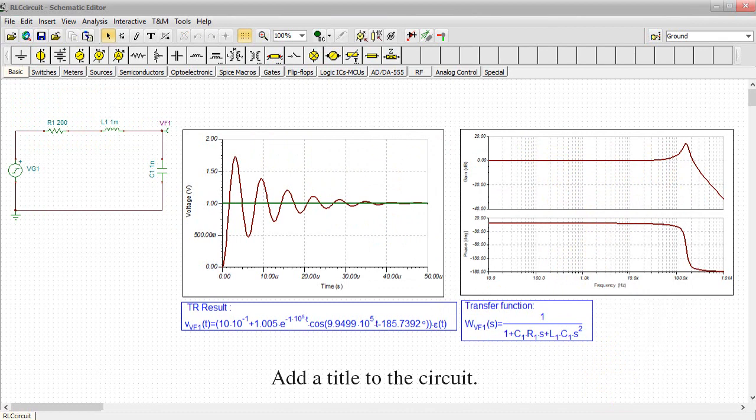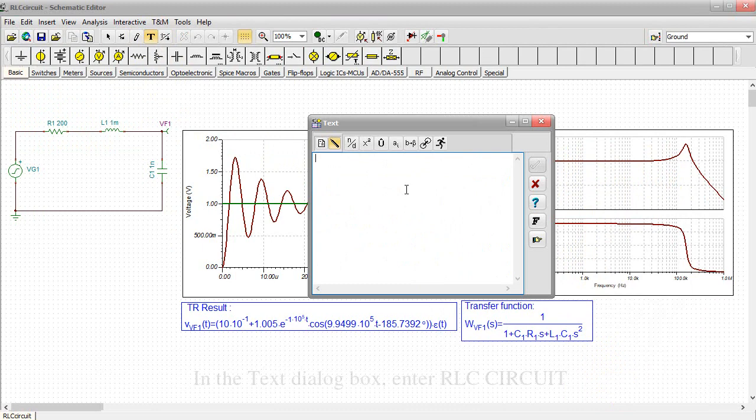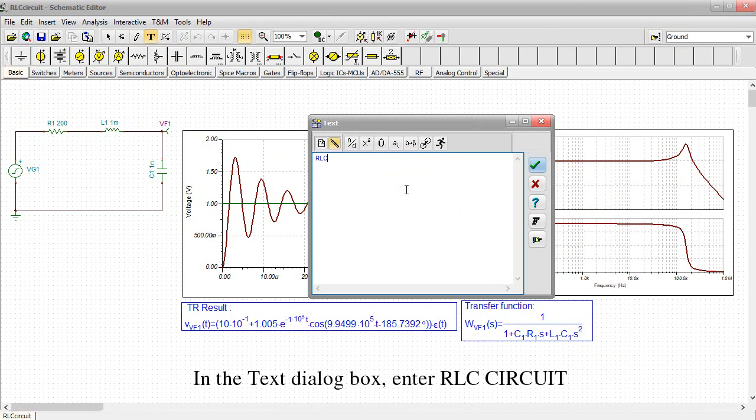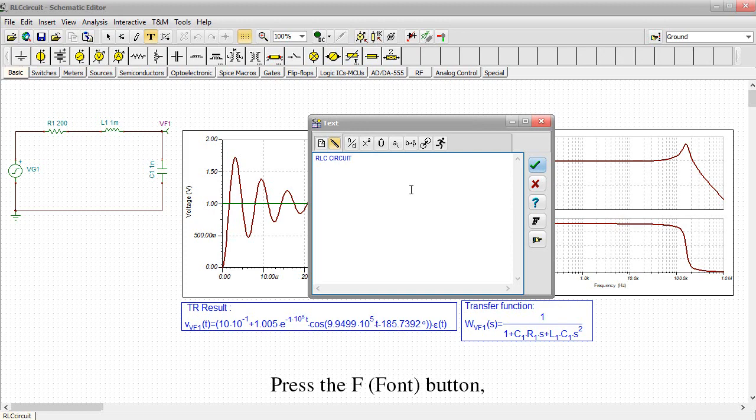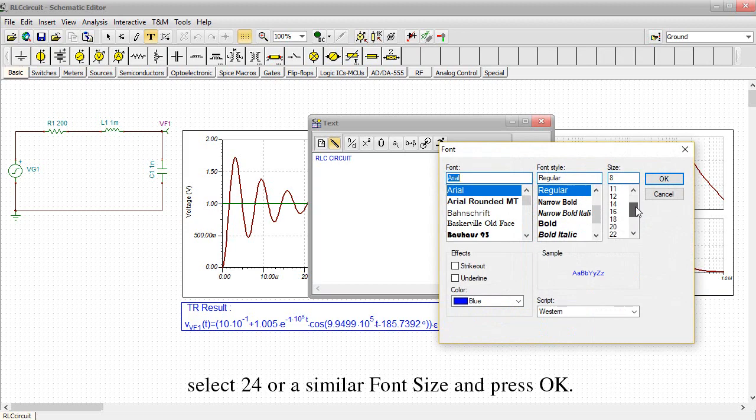Add a title to the circuit. Press the large T button on the toolbar. The Text dialog will appear. In the Text dialog box, enter RLC Circuit, press the F Font button. Select 24 or a similar font size and press OK.